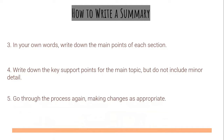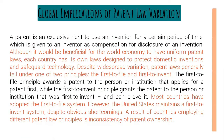Let's have an example. Notice the highlighted part of the text. Global Implications of Patent Law Variation. A patent is an exclusive right to use an invention for a certain period of time, which is given to an inventor as compensation for disclosure of an invention. Although it would be beneficial for the world economy to have uniform patent laws, each country has its own laws designed to protect domestic inventions and safeguard technology. Despite widespread variation, patent laws generally fall under one of two principles: the first-to-file and first-to-invent. Most countries have adopted the first-to-file system.